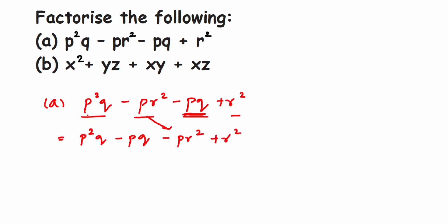Now, p squared means p into p. So the first two terms are p into p into q, minus p into q. The next two terms are minus p into r into r, plus r into r. I'm expanding them just to show you how we are taking common variables.